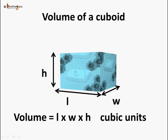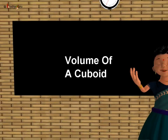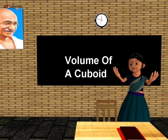And coming to the cuboid, the volume of a cuboid would be equal to length multiplied by width multiplied by height cubic units. So now you know how to calculate the volume of a cube and a cuboid. That's all for now. Bye-bye children.